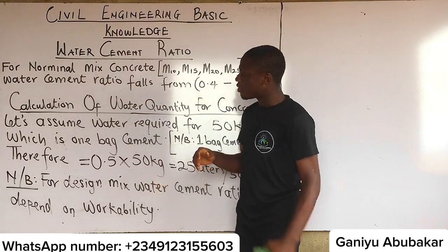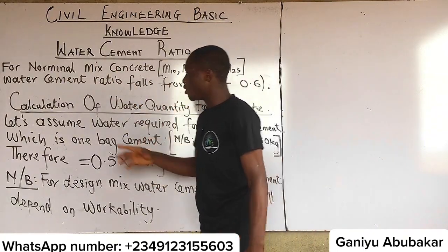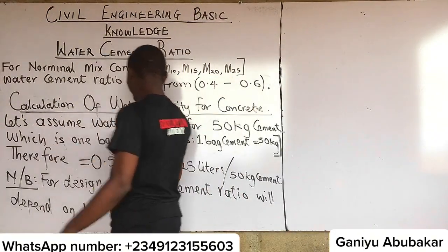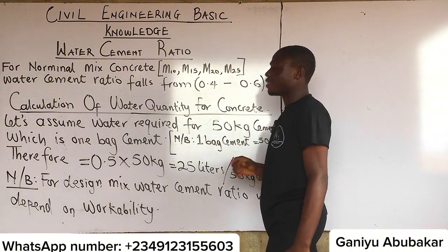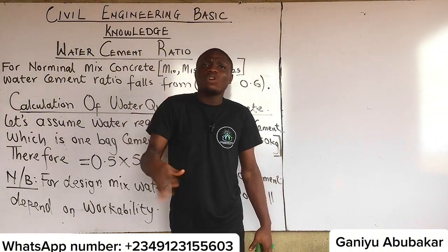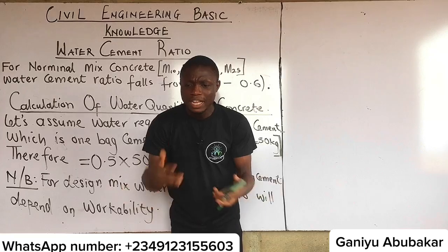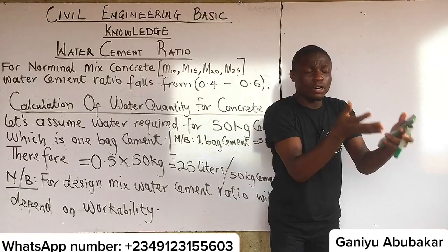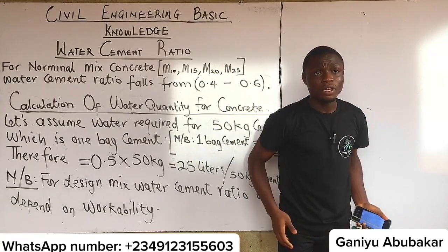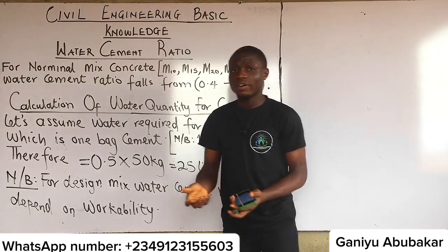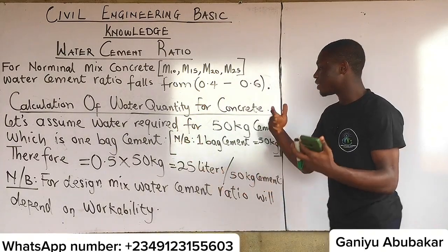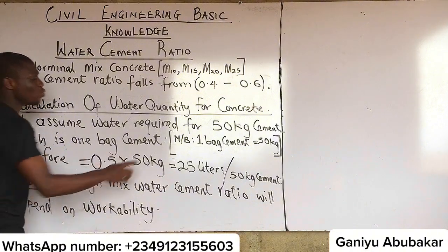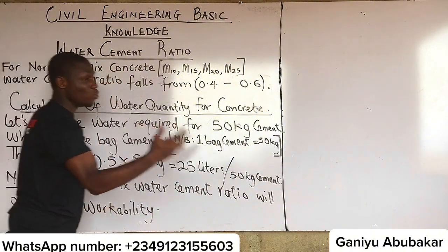Let's discuss the calculation of water quantity for concrete. Assume water is required for 50 kg of cement. We know that one bag of cement weighs 50 kilograms. So the question is: given 50 kg of cement on site, how much water do I need to mix it to standard?